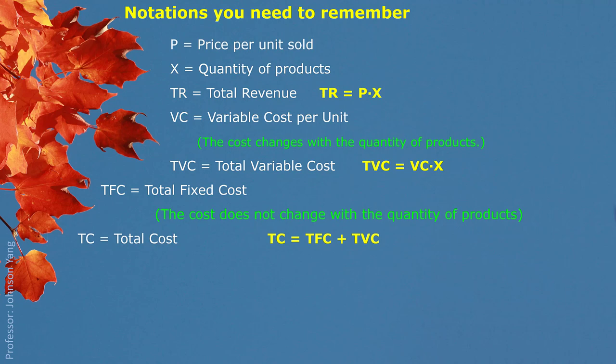TFC, or FC, means fixed cost or total fixed cost. Fixed cost could include rent, insurance, and advertising. Any manufacturer may have different kinds of fixed costs. No matter how you recognize fixed cost, only look at whether this part of cost changes with the quantity of product. If it changes, it is variable cost. If it doesn't change, it is recognized as fixed cost.